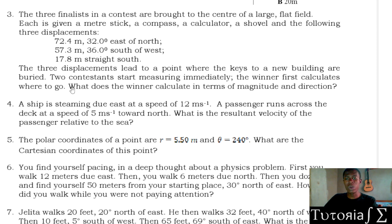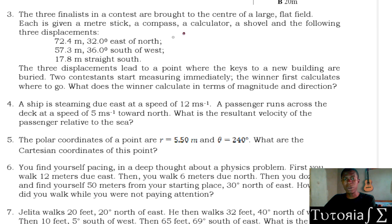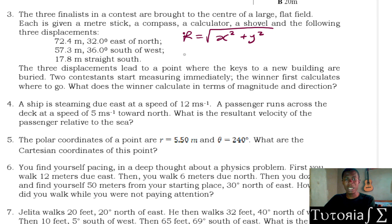To find the resultant, the formula is R equals the square root of x-squared plus y-squared. This applies whether it's a resultant displacement, resultant force, or any resultant vector. To find the direction of the resultant, the formula is theta equals tan inverse of the y-component over the x-component.